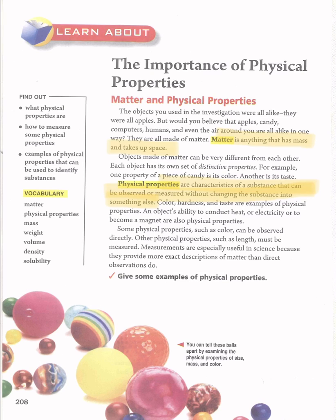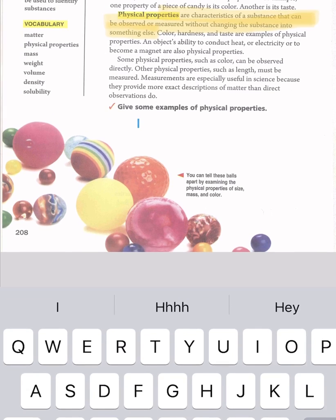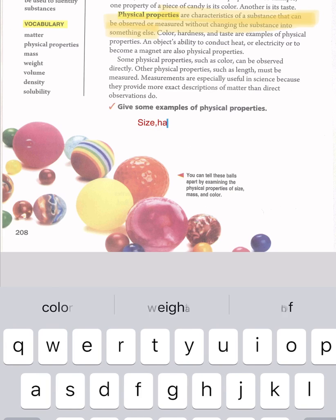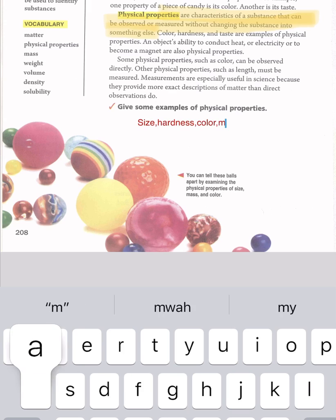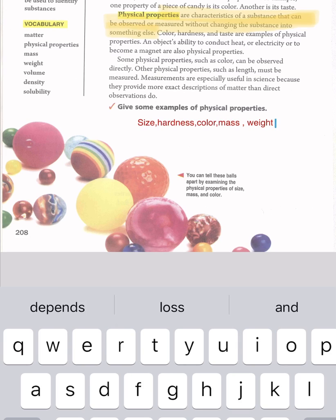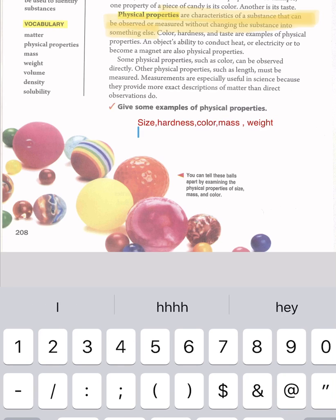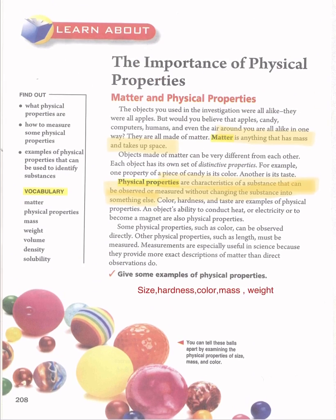Here we have a question: give some examples of physical property. As I told you, examples are: size, hardness, color, mass, and weight. Those are enough examples of physical properties. Good — hope you get it. Let's go to the next slide.